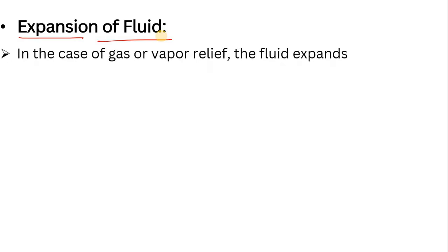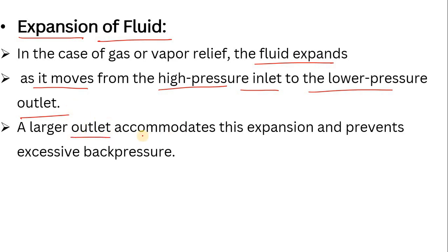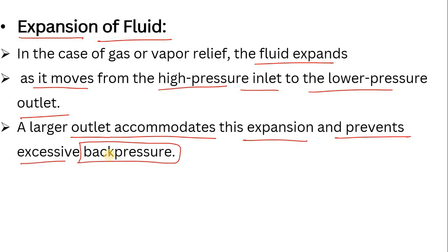The first reason is expansion of fluid. When your system becomes over-pressurized, in the case of gas or vapor relief, the fluid expands. When the fluid expands, the density decreases. The fluid moves from higher pressure at the inlet to lower pressure at the outlet, and a larger outlet size accommodates this expansion and prevents excessive back pressure. If this excessive back pressure is present, the PSV may not open or work properly. That's why a larger outlet size is recommended.